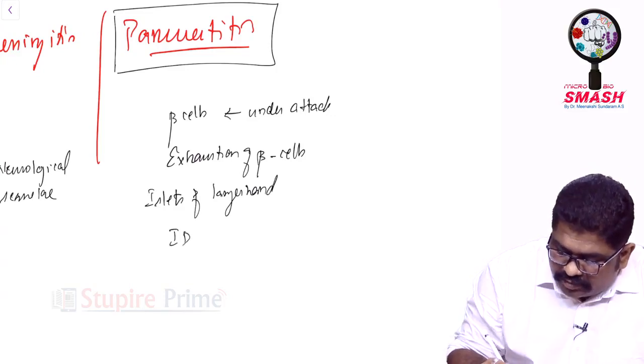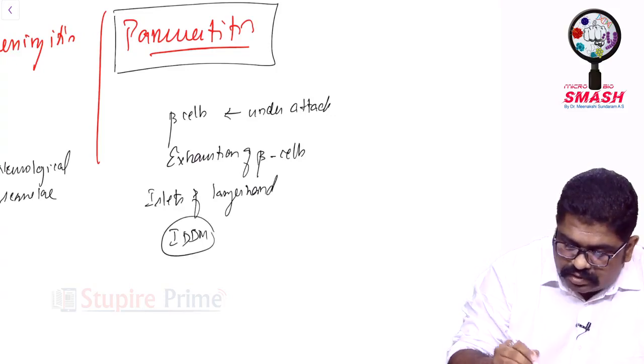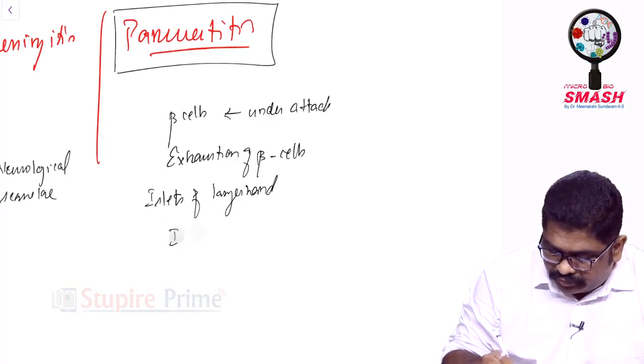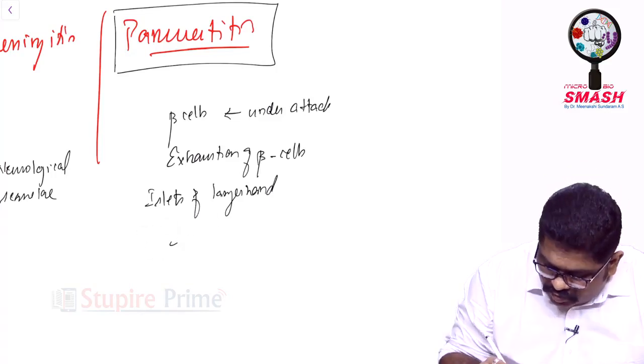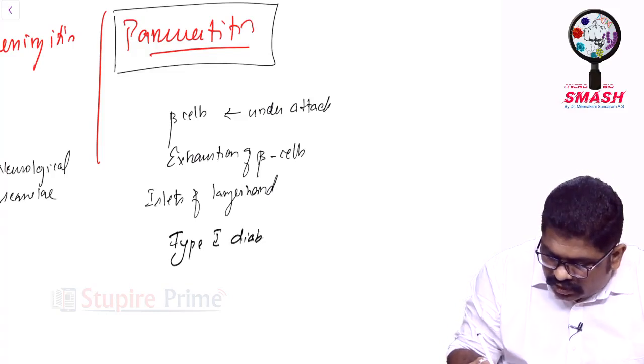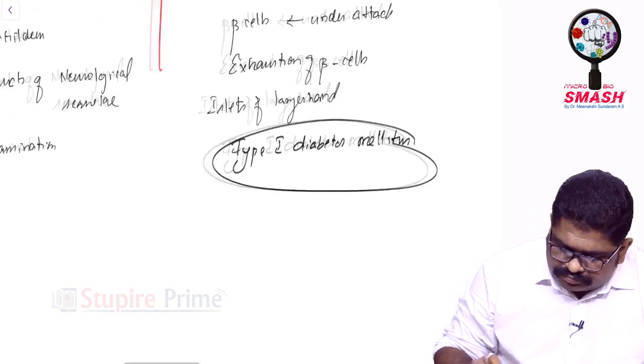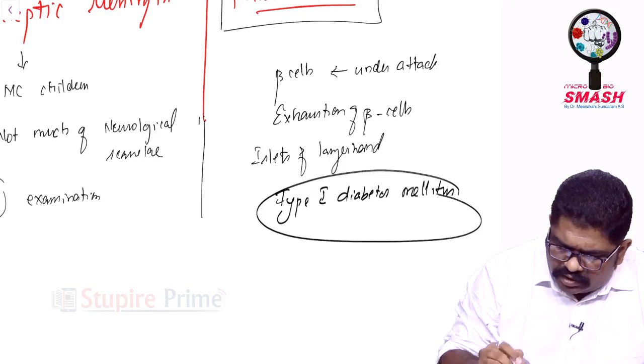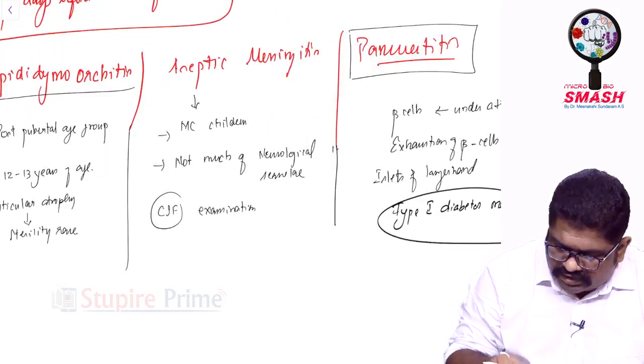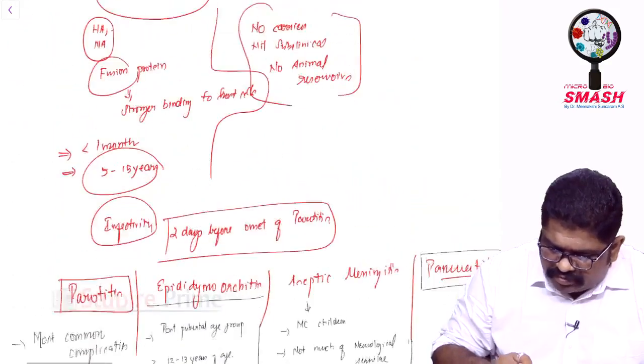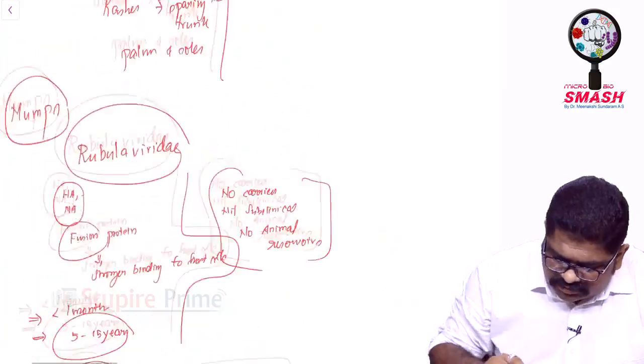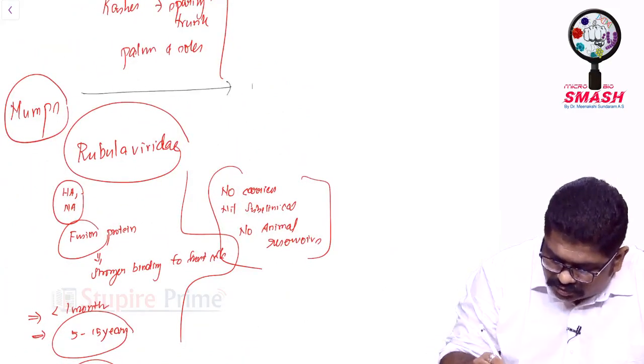This affects the islets of Langerhans, leading to early onset insulin-dependent diabetes mellitus, which can lead to type 1 diabetes mellitus. While this organism is known for causing aseptic meningitis, some people have rarely shown some kind of sensory neural hearing loss also.